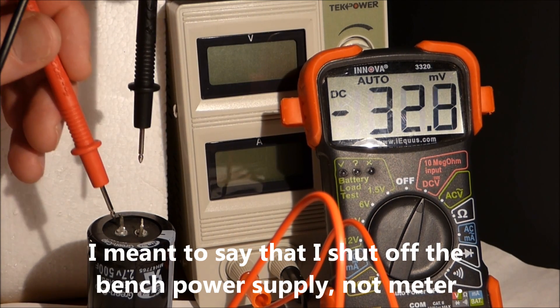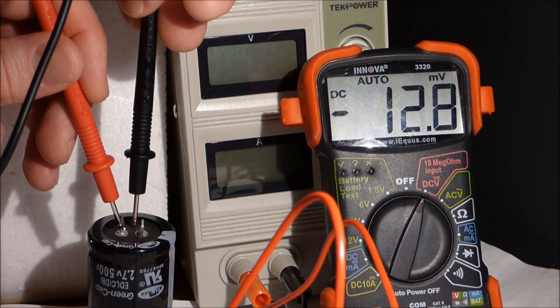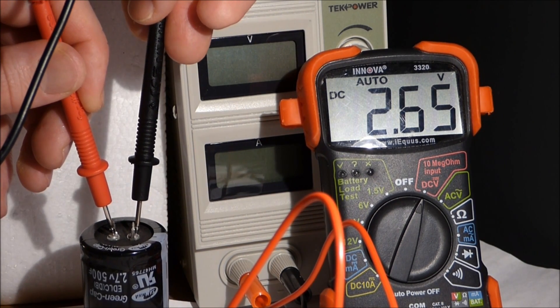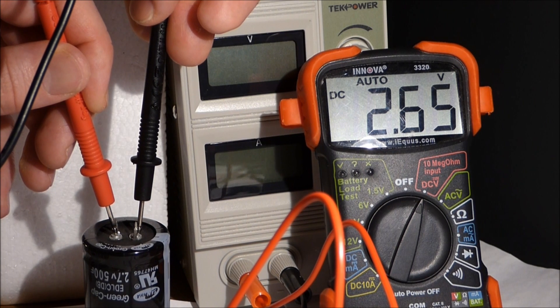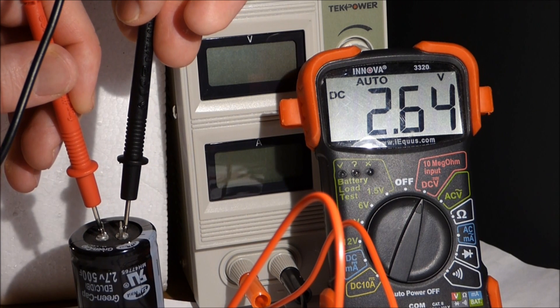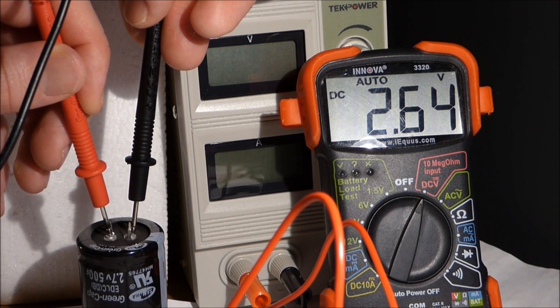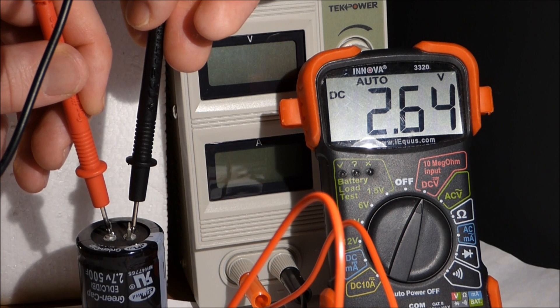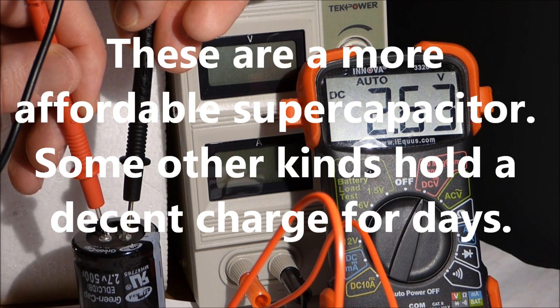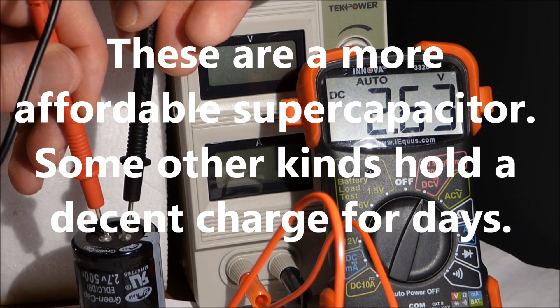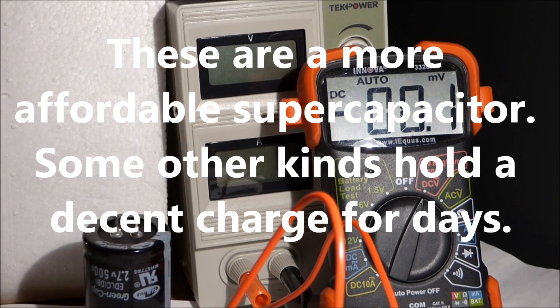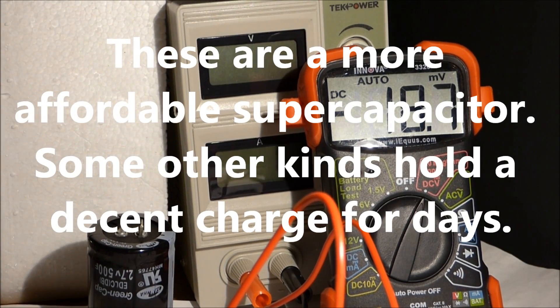I shut off the meter and disconnected the clips going to the super capacitor just maybe a minute ago. Now you'll see we're at 2.65, and I'm guessing it'll drop to 2.64 that quick. These super capacitors, they don't hold their charge as well as a lot of them could. That's not the meter draining that much charge, that's just the way these are made.